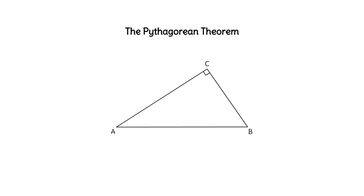One of the most important theorems in mathematics is the Pythagorean theorem. It relates the three sides of a right triangle — that is, the two legs A and B, and the hypotenuse C.